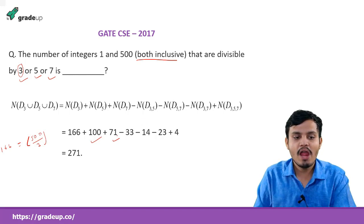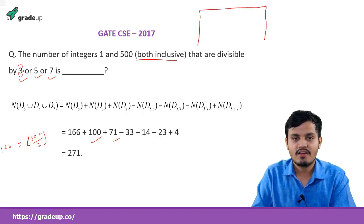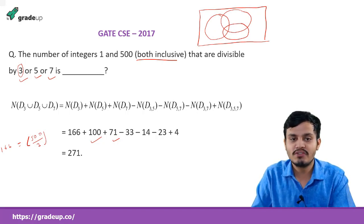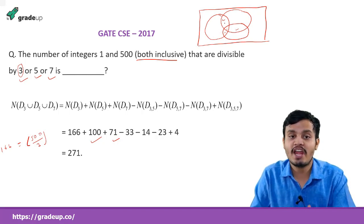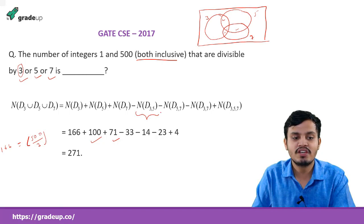Now why are we doing the subtraction here? This is the set of numbers divisible by 3, divisible by 5, divisible by 7. When I counted numbers divisible by 3, 5, and 7 separately, I counted the intersection portions twice and the mutual intersection of all three as three times. So I need to exclude these portions — those are the intersection of 3 and 5, 3 and 7, and 5 and 7.